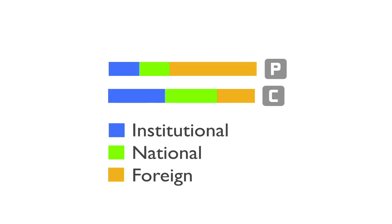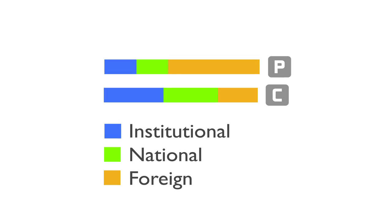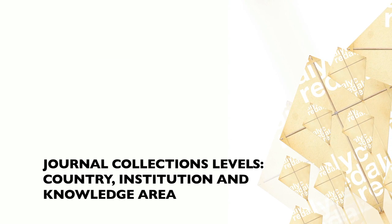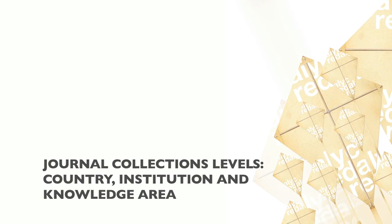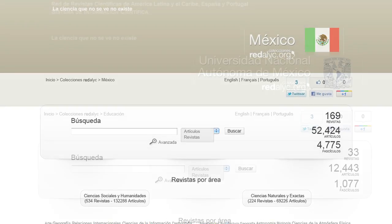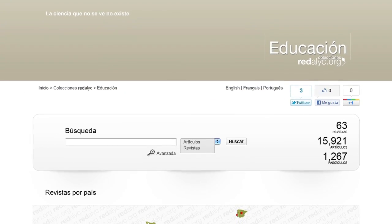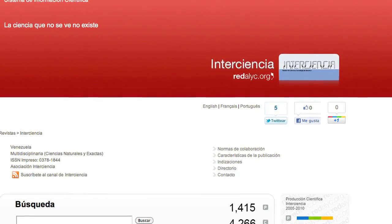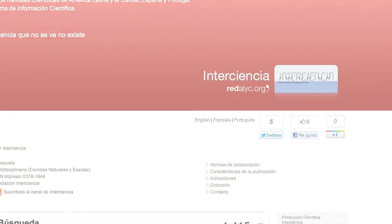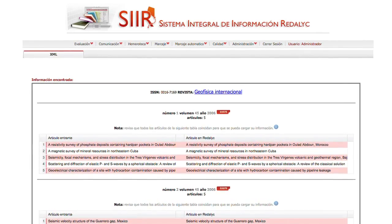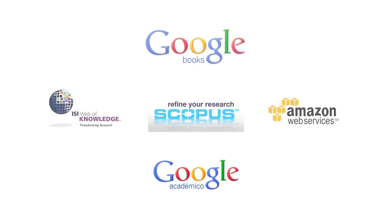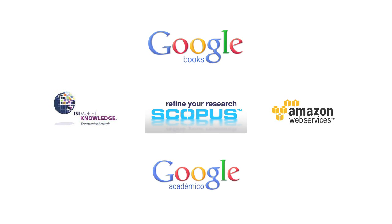Scientific Activity Profiles: Scientific Output and Collaboration for each Profile — Institutional, National, Foreign. Journal Collections Levels: Country, Institution and Knowledge Area. Browse journals edited in a specific country, university or discipline. Interaction and Interoperability: Journal RSS, General RSS, Twitter, Facebook, Google Plus integration. Import-export metadata capabilities. Enriching user experience by using external APIs to obtain related or similar papers, more information about authors, citations, etc.